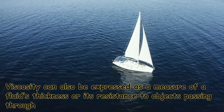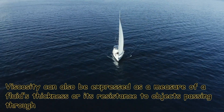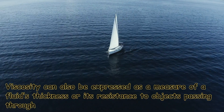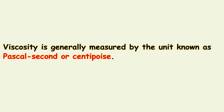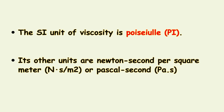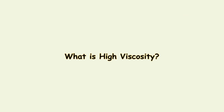Viscosity can also be expressed as a measure of a fluid's thickness or its resistance to an object passing through it. Viscosity is generally measured by the unit known as Pascal-second or centipoise. The SI unit of viscosity is poise. Other units are Newton-second per square meter. The coefficient of viscosity, pronounced as eta, can be defined as the ratio of shearing stress to the strain rate.